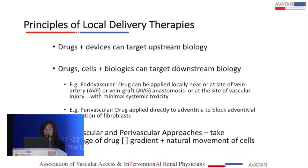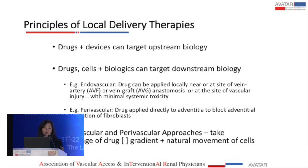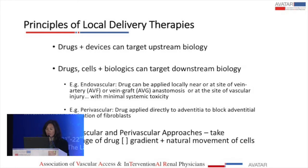What I'd like to focus the rest of this talk on is localized therapies. First, let me review some principles of local delivery therapies. Both drugs and devices can target upstream biology. Drugs, cells, and biologics can target downstream biology. For example, if you have an endovascular procedure, the drug can be applied locally at or near the vein artery or vein graft anastomosis with very little systemic toxicity — really localized to that lesion. We can have perivascular approaches so the drug can be applied directly to the adventitia to block adventitial activation of fibroblasts.